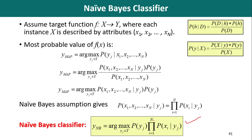So this is the expression for the Naive Bayes classifier: ynb equals argmax over yj belonging to Y of probability of yj times the product of probabilities of xi given yj, where i varies from 1 to n for n features. Probability of yj can be computed easily from the dataset, and now it is possible to compute the probability of each individual attribute given the target value. For example, if we are having two classes — say yes and no — then y1 is yes and y2 is no.